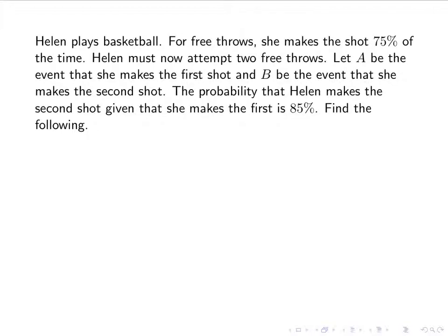Let's look at an example. Helen plays basketball. For free throws, she makes the shot 75% of the time. Helen must now attempt two free throws. Let A be the event she makes the first shot and B be the event she makes the second shot. The probability that Helen makes the second shot given that she makes the first is 85% — you can think of her gaining confidence after making the first.